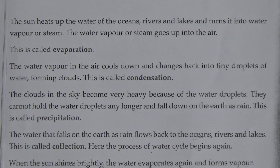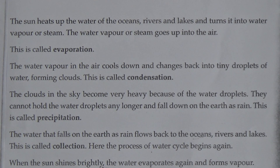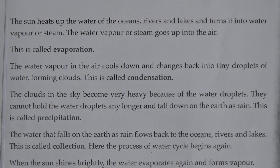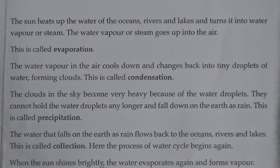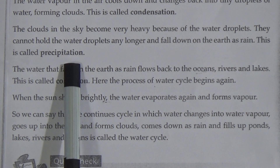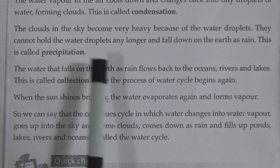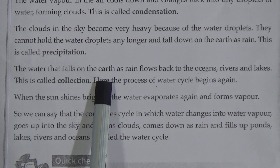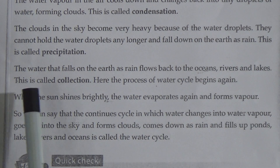When the sun is very hot, water evaporates from the river, canal, or tank and goes up into the sky. When the vapor cools down — that is condensation — it comes back to the earth as rain droplets. The clouds in the sky become very heavy because of the water droplets and cannot hold them any longer, so they fall down on the earth as rain. This is called precipitation. The water that falls on the earth as rain flows back to the oceans, rivers, and lakes — this is called collection.